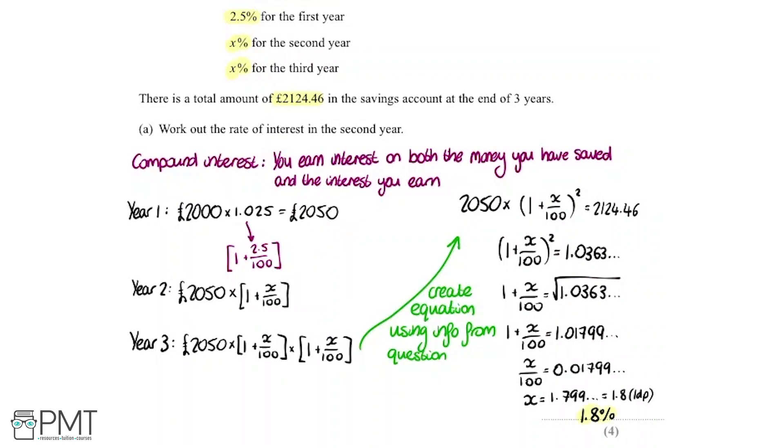We get one mark for the first year calculations. We get a second mark for going through the process and forming an equation. We get another mark for going through the process to solve for x. And we get our final mark for the correct answer of 1.8 percent. However, something to point out, because it's not specific of how you should round it, we get the final mark for any answer between 1.79 percent and 1.8 percent.